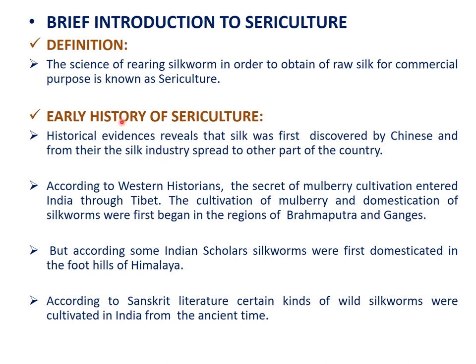Historical evidence reveals that silk was first discovered by the Chinese, and from there the silk industry spread to other parts of the world. According to Western historians, the secret of mulberry cultivation entered India through Tibet. The cultivation of mulberry and domestication of silkworms first began in the regions of Brahmaputra and Ganges. According to Indian scholars, silkworms were first domesticated in the foothills of the Himalayas, and according to Sanskrit literature, certain kinds of wild non-mulberry silkworms were cultivated in India from ancient times.